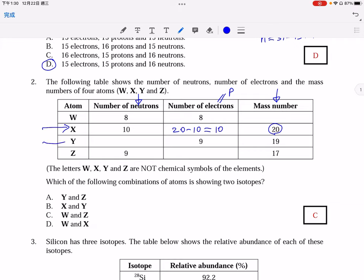Similarly, for atom Y, as the mass number is 19, so the number of neutrons can be found by 19, the mass number, minus the number of electrons, which means 10.